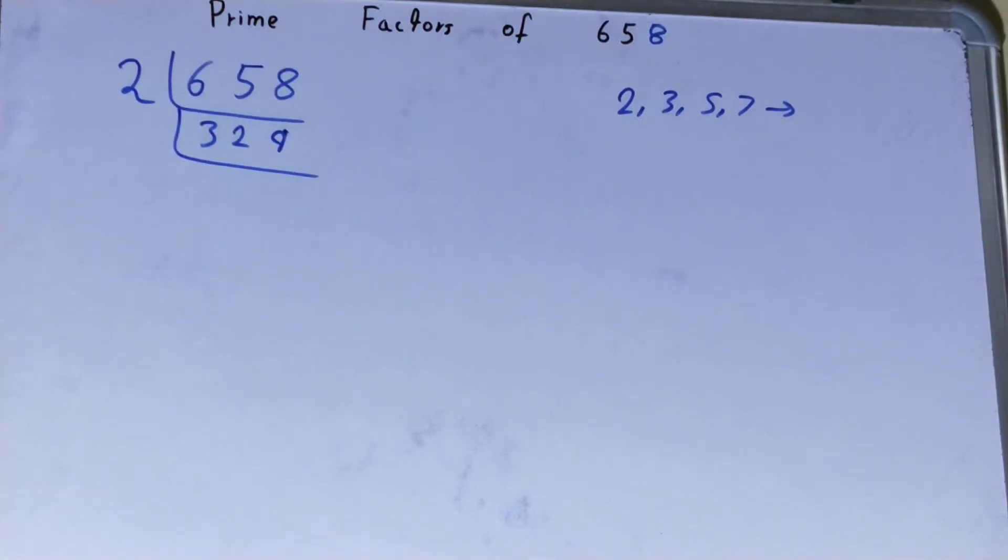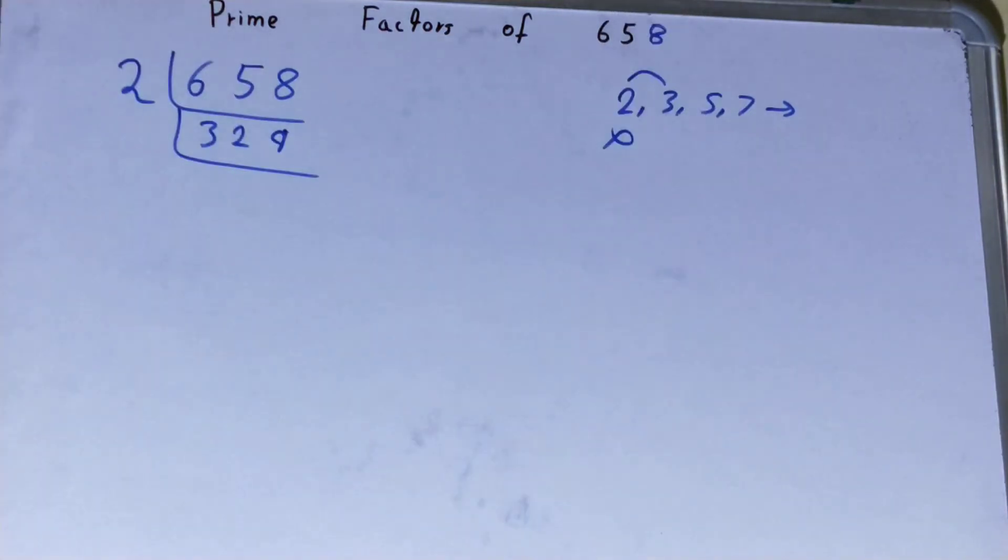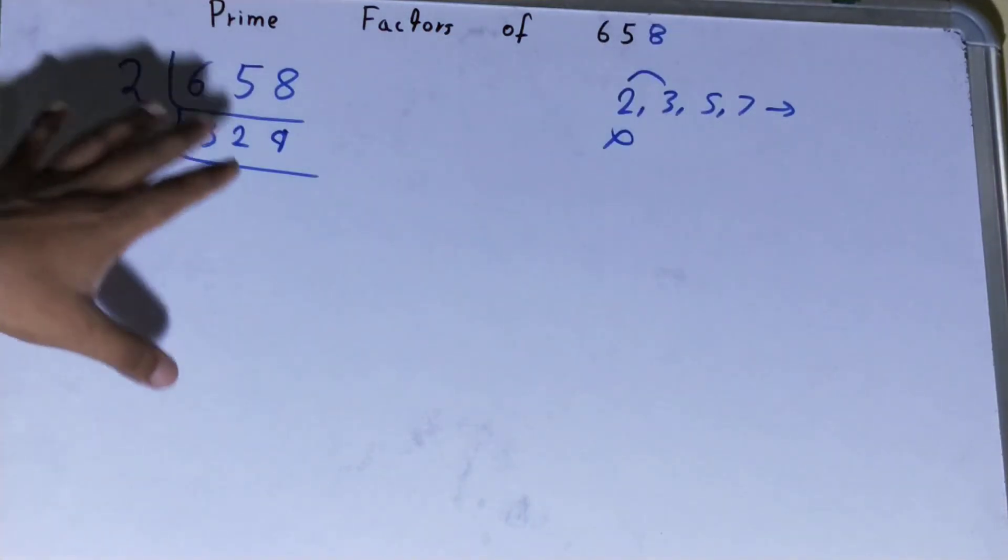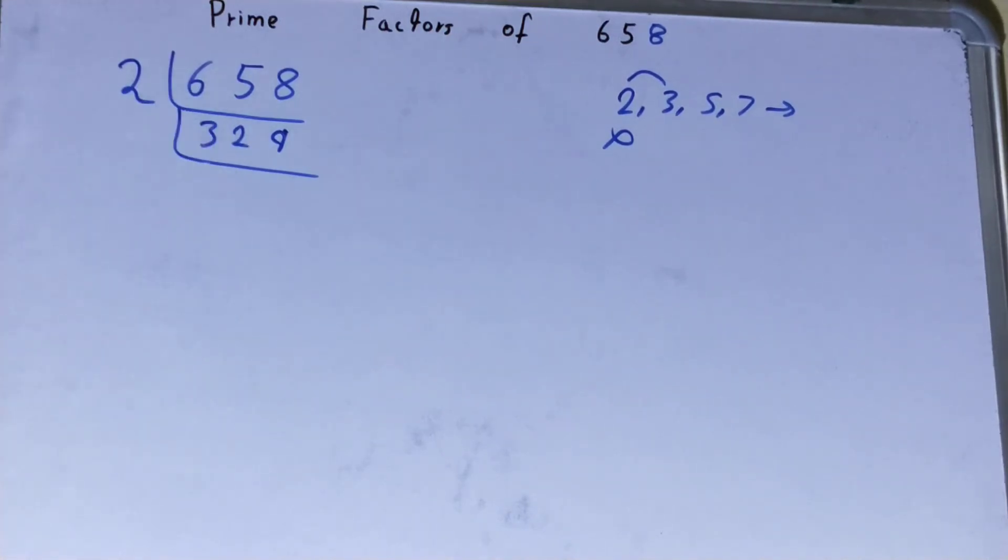Is the number 329 divisible by 2? The answer is no, it is an odd number. So what we'll do is go to the next lowest prime number, that is 3. Is the number 329 divisible by 3? Let's check: 3 tens of 329, no it is not divisible by 3.